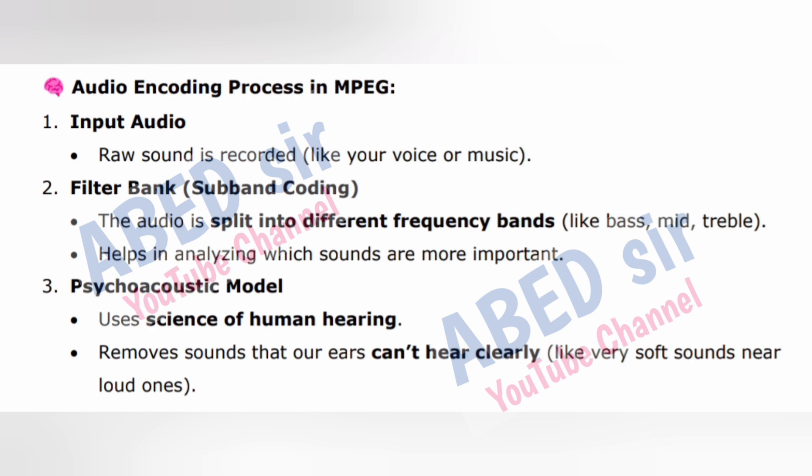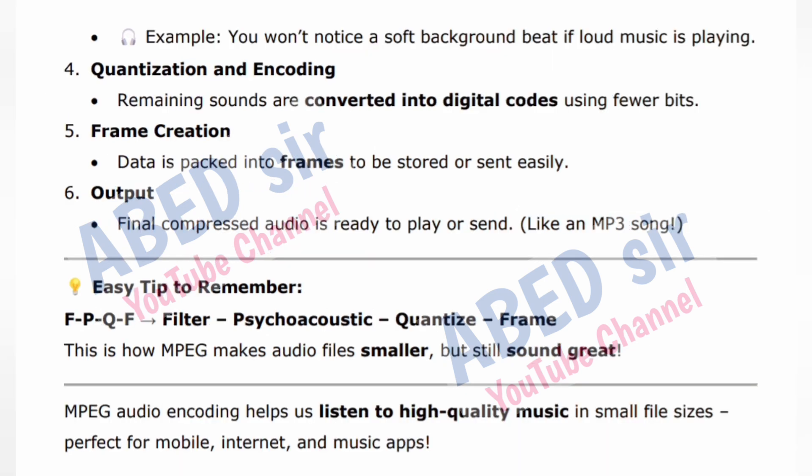Audio encoding process in MPEG. Step 1 — Input audio: raw sound is recorded, like your voice or music. Step 2 — Filter bank / subband coding: the audio is split into different frequency bands like bass, mid and treble, helping to analyze which sounds are more important. Step 3 — Psychoacoustic model: uses the science of human hearing, removes sounds that our ears can't hear clearly, like very soft sounds near loud ones. Example: you won't notice a soft background beat if loud music is playing.